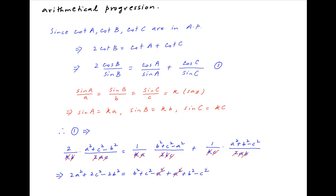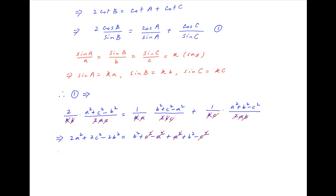On the right hand side, a square cancels and so does c square. And this whole equation simplifies to 2 times in brackets a square plus c square minus b square is equal to 2 times b square.